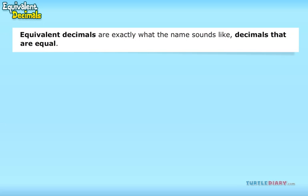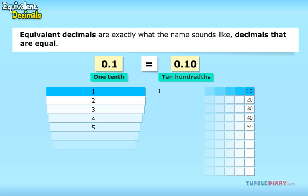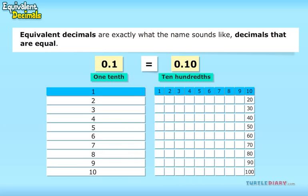For example, 0.1 is equal to 0.10. The best way to understand equivalent decimals is to look at a model or illustration. In the model, it is clear to see how 0.1 is equal to 0.10.